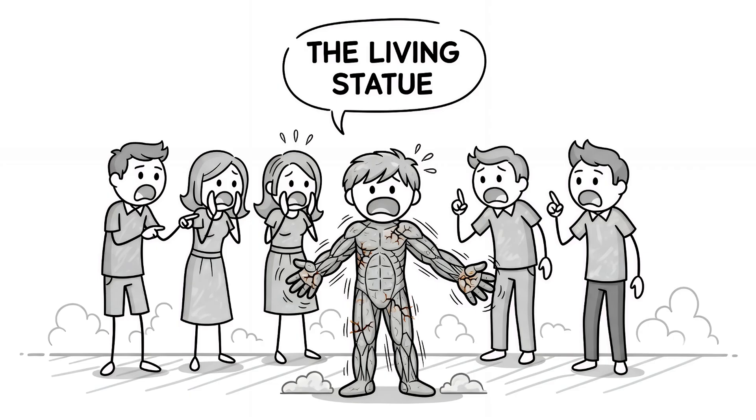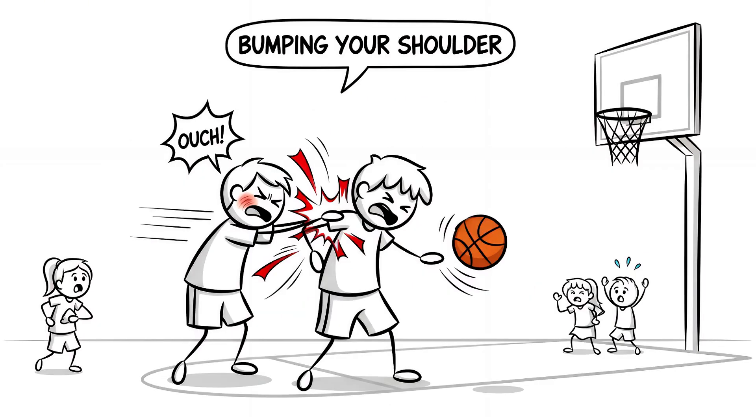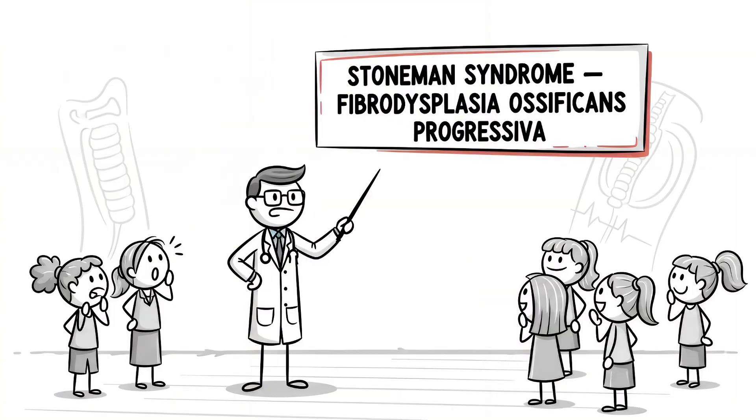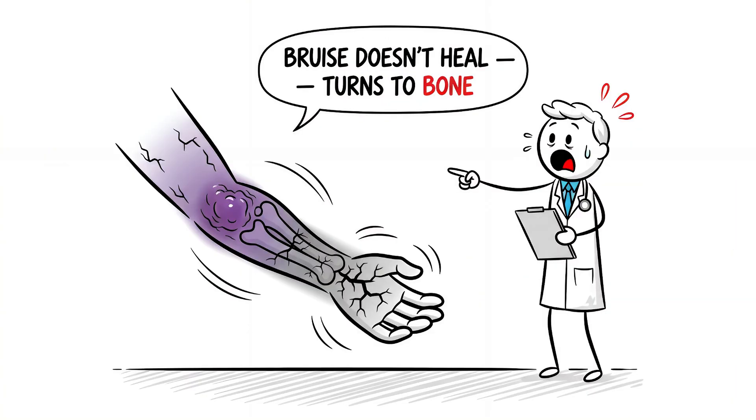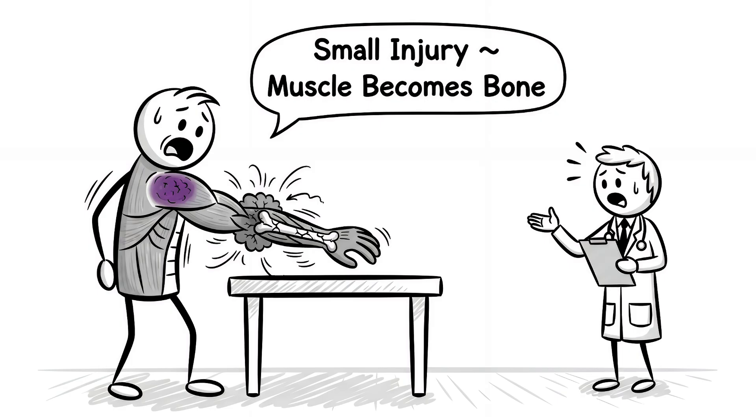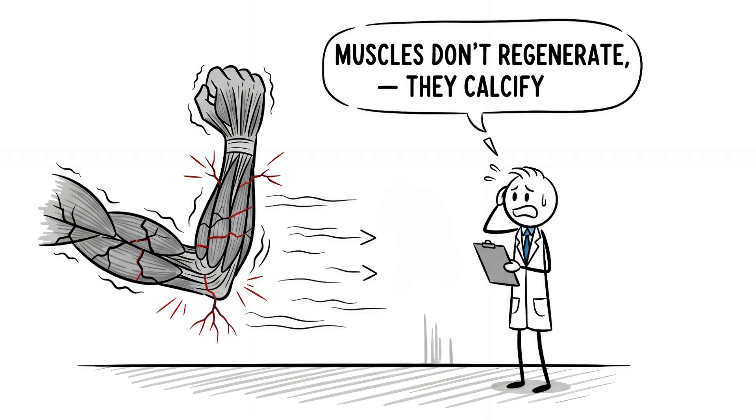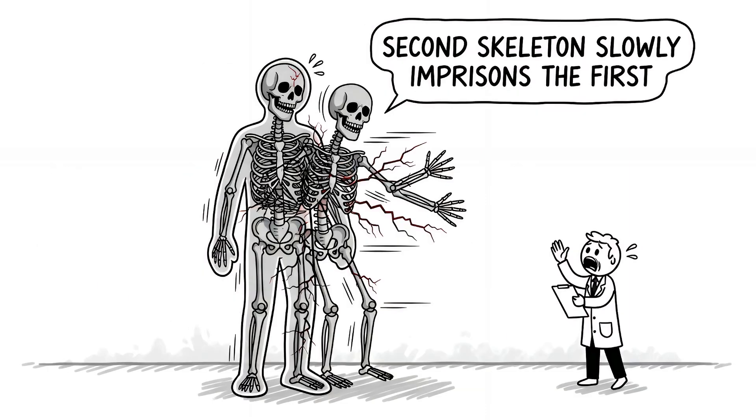Number 2. The living statue. You bump your shoulder and arm when playing basketball. A normal bruise heals in a week. But if you have Stoneman's Syndrome, that bruise doesn't heal. It turns to bone. A small injury triggers your body to replace damaged muscle with solid bone. Forever. Over time, your muscles don't regenerate. They calcify. You grow a second skeleton inside your skin that slowly imprisons the first one.